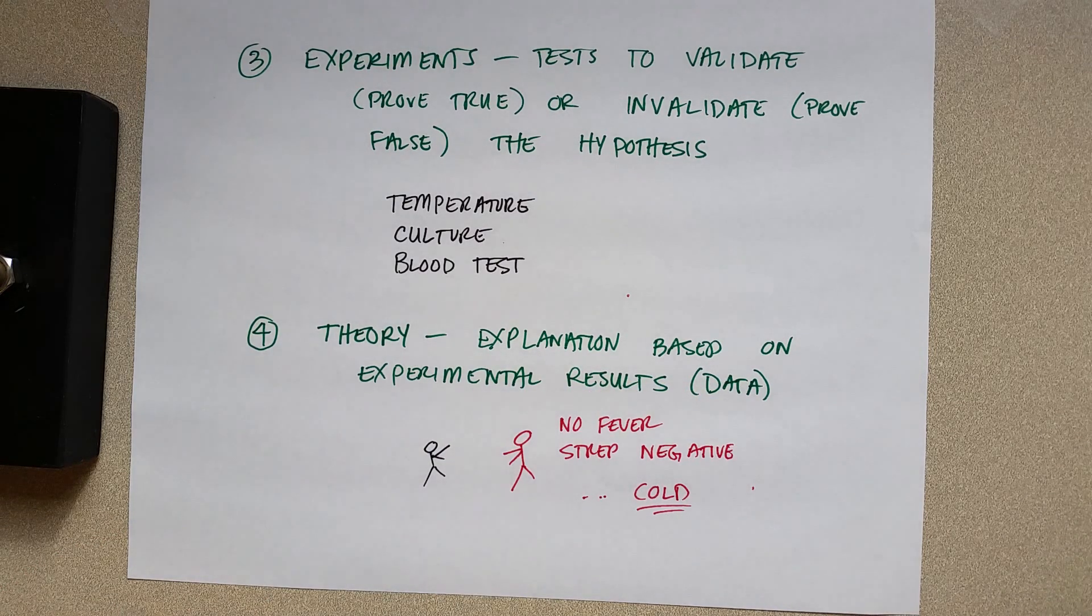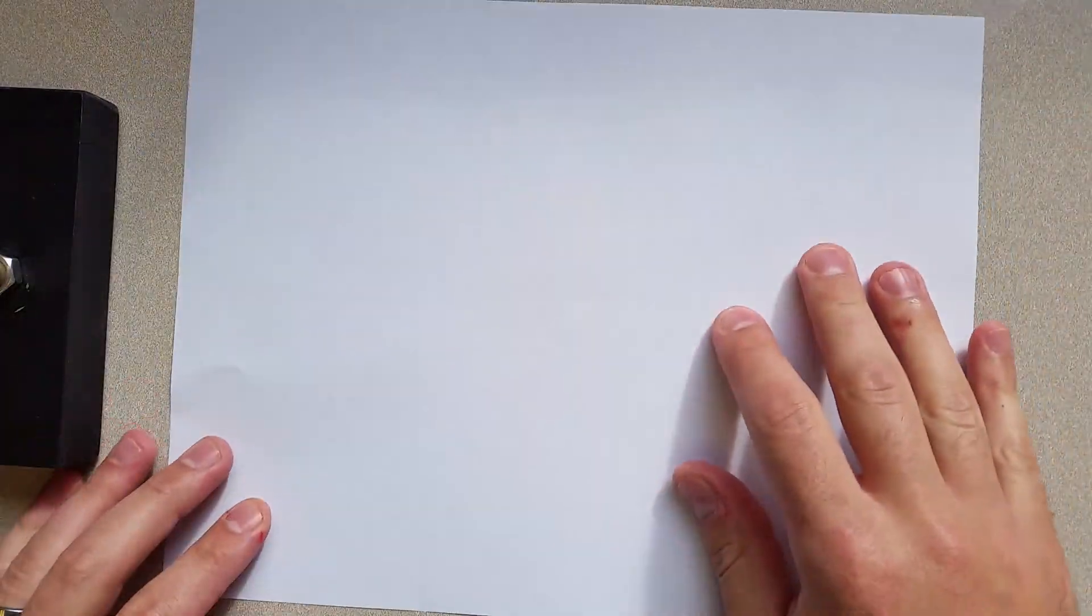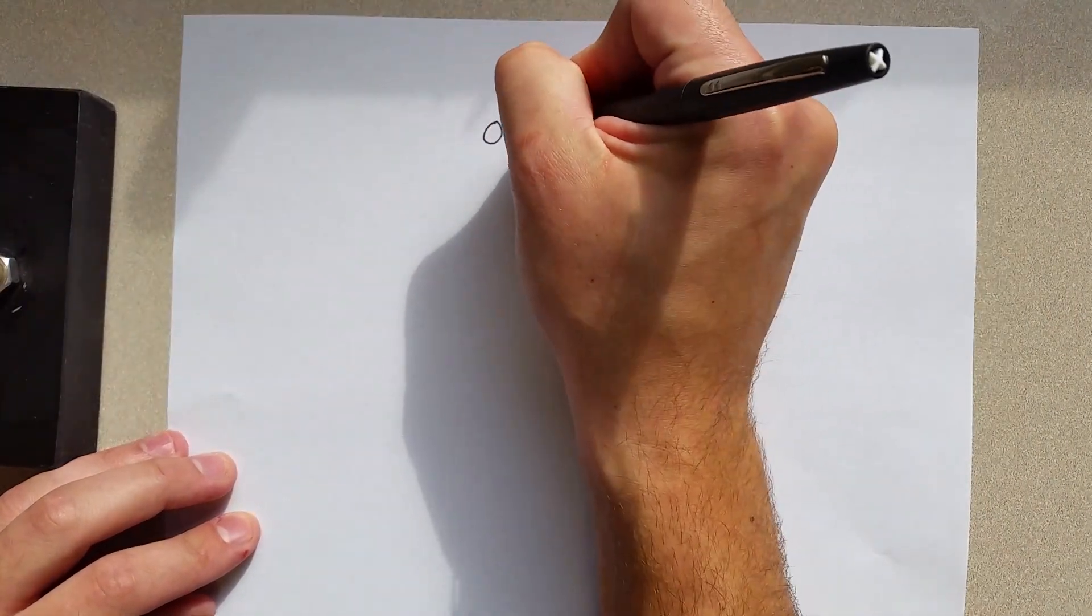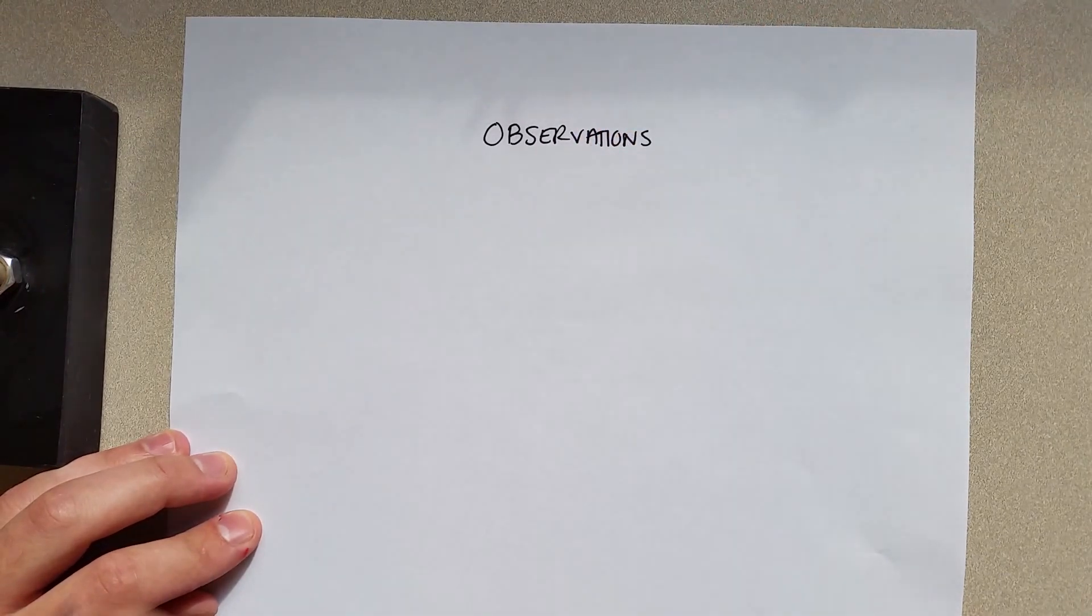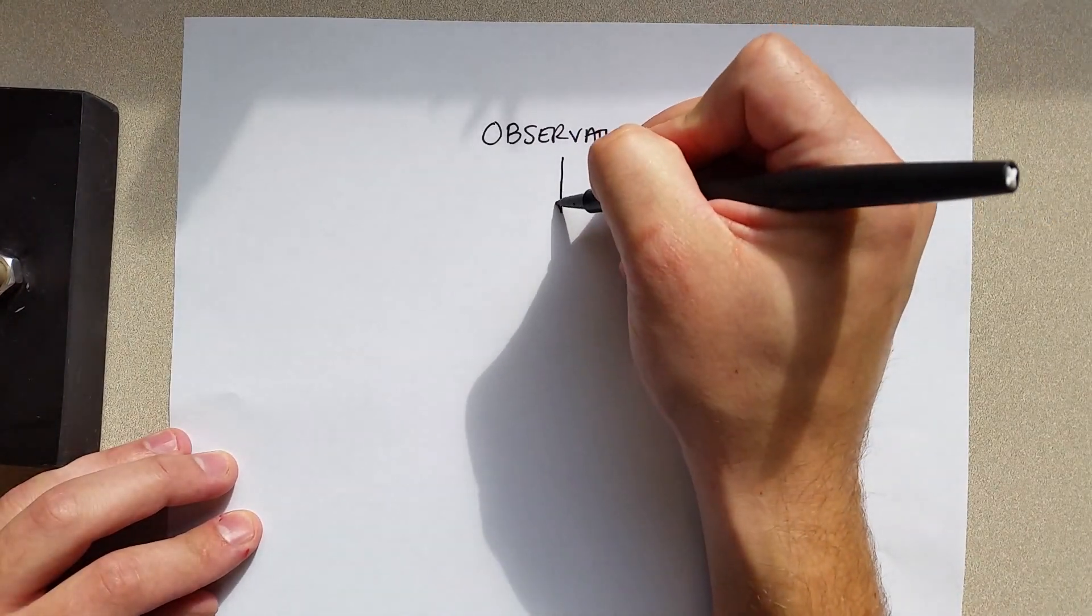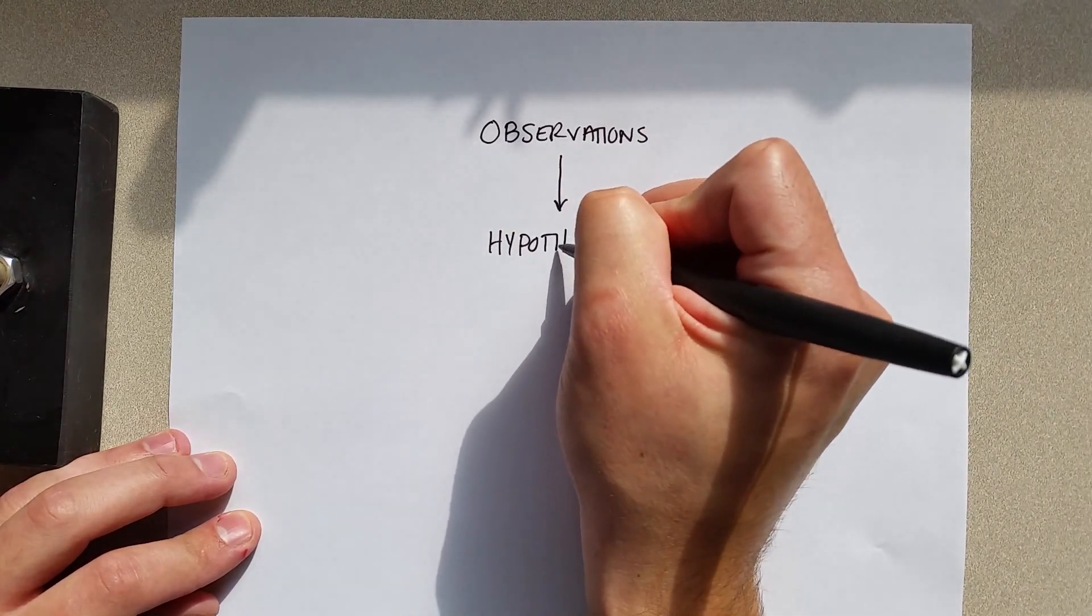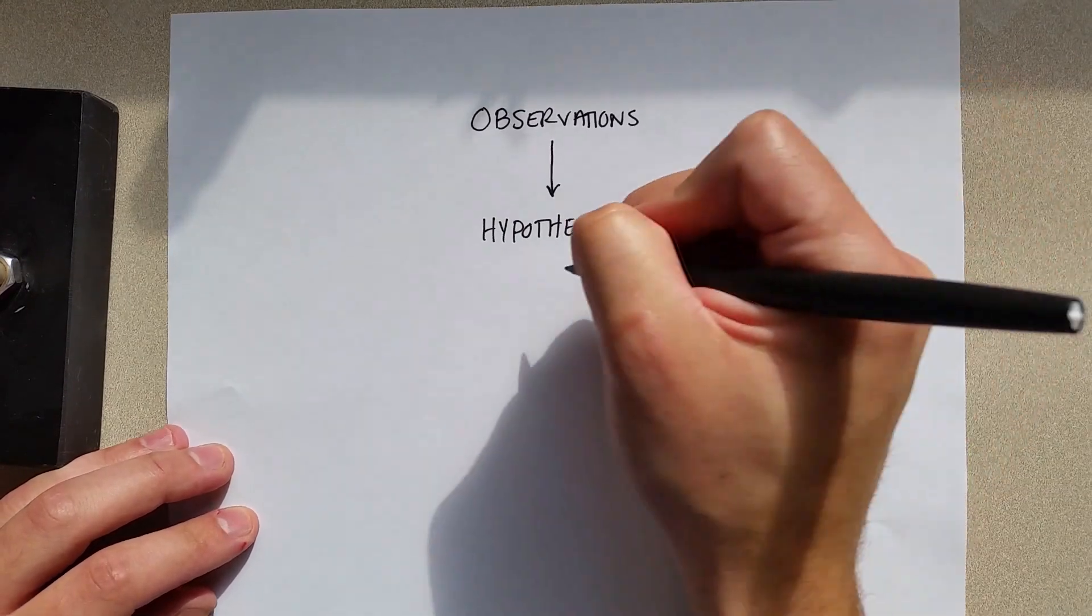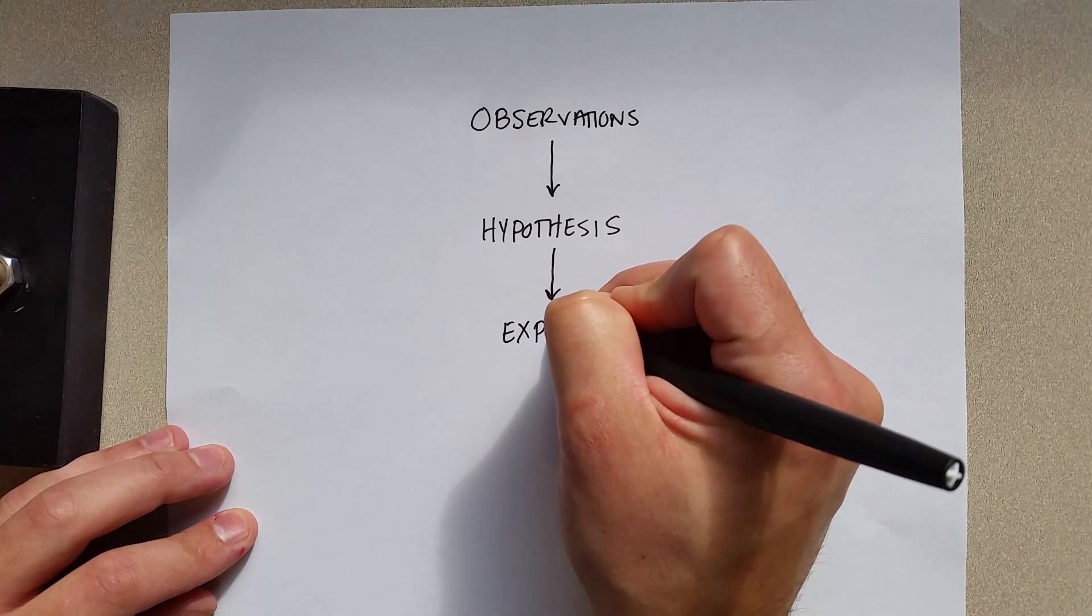This isn't always a completely linear process. A lot of times we have to go back and forth between the steps of the scientific method. But in essence, we are always going to start off with observations. From those observations, we're going to form a hypothesis. The hypothesis must be testable so that we can perform experiments to determine if it's true or not.